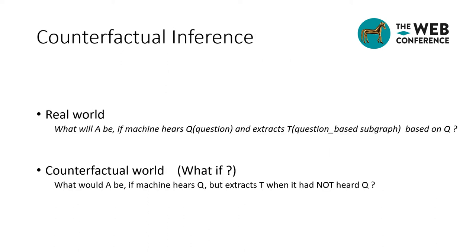Counterfactual inference is a logic used to answer retrospective 'what if' questions. For instance, counterfactual inference can answer the question: what would the prediction be if a cause had not happened? For example, we can remove a feature, subgraph, or subgraph and assess the causal effect through the change of the outcome. In the real world, our question is: what will A be if a machine hears Q and X traces T based on Q? And in the counterfactual world, our question is: what would A be if a machine hears Q but X traces T as if it had not heard Q?